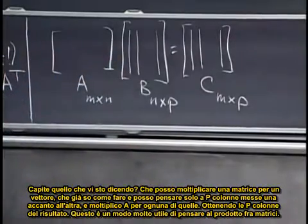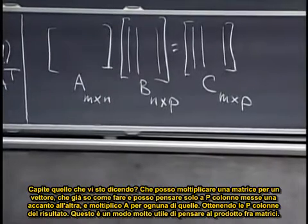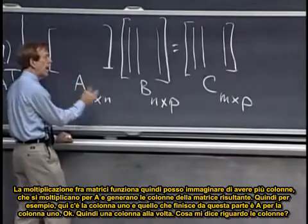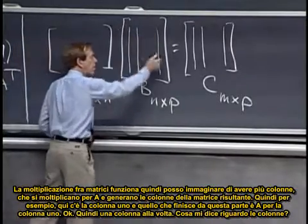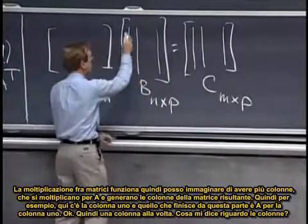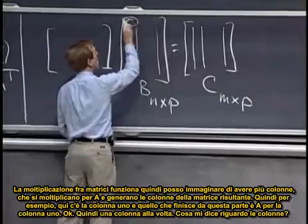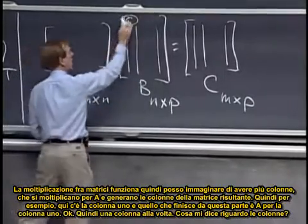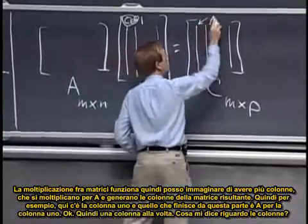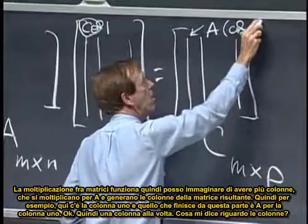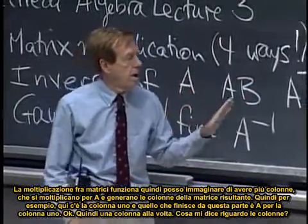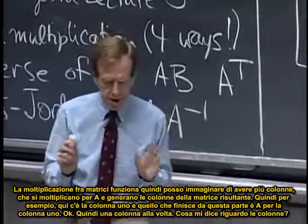And I can think of the vector, I can think of just p columns sitting side by side, just like resting next to each other. And I multiply A times each one of those and I get the p columns of the answer. Do you see this is quite nice. To be able to think, matrix multiplication works so that I can just think of having several columns, multiplying by A, and getting the columns of the answer. So, like here's column one, shall I call that, here's A, shall I call that column one? And what's going in there is A times column one.